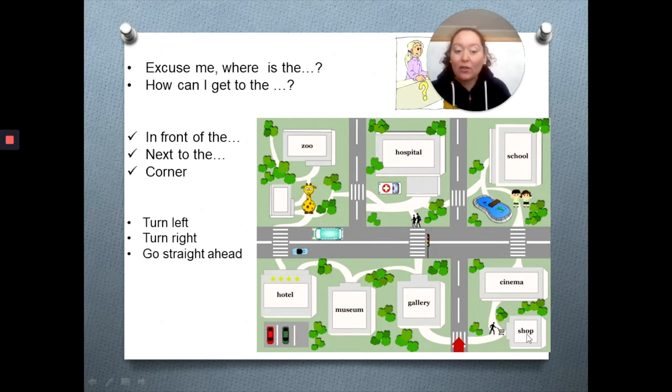Vamos a localizar primero dónde está shop. Shop, podemos decir que está in front of the gallery. In front. Hay una calle que los separa. Por lo tanto, it's in front of the gallery. También podemos decir that it's next to the cinema. El shop está al lado del cinema. Y una palabra súper importante para poder comprender cuando nos están dando indicaciones para llegar a un lugar es la palabra corner. Corner means esquina.